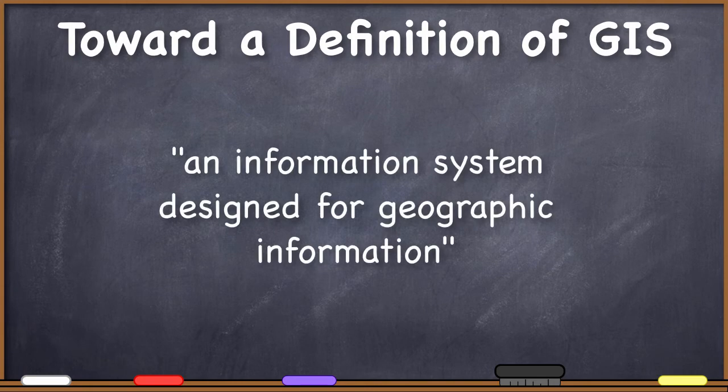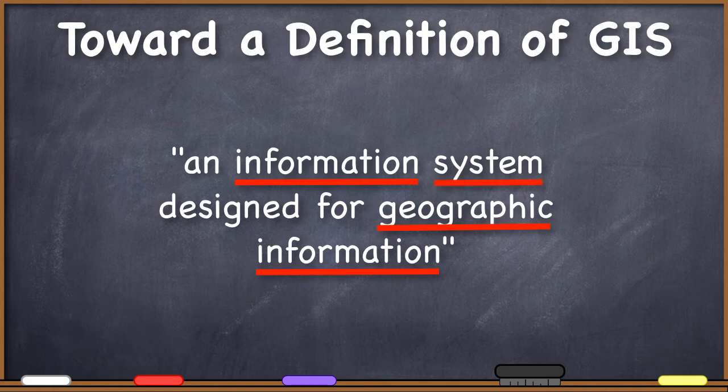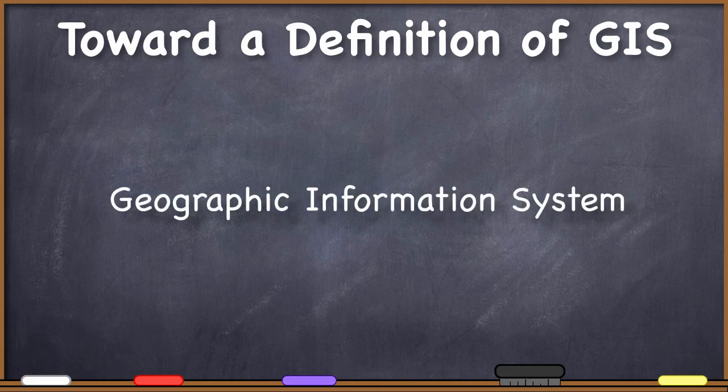For instance, an information system designed for geographic information. Now this is a bit of an exaggeration because it's such a terrible definition, but it's not much of one. I have seen many different definitions of GIS that come pretty close to being this bad. With a definition like this, you might as well not have one at all. Obviously, this is a terrible definition because it contains the words that we're trying to define. If you are trying to define geographic information system, you cannot use the words geographic or geography or information or system. Instead, we have to look at each of these parts individually to see what they mean. So that's exactly what I'm going to do, but I'm going to do this in reverse order.